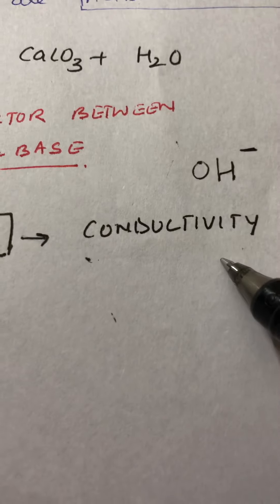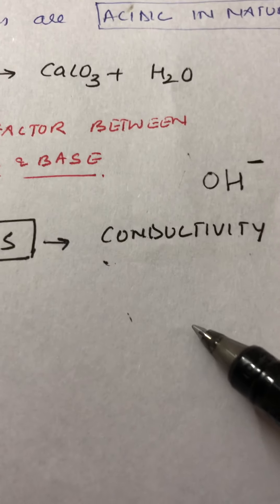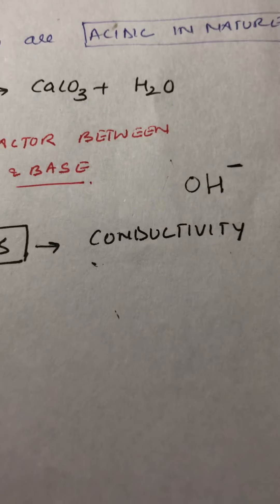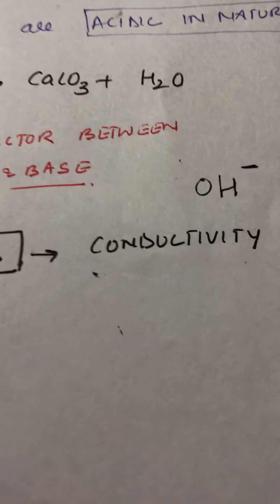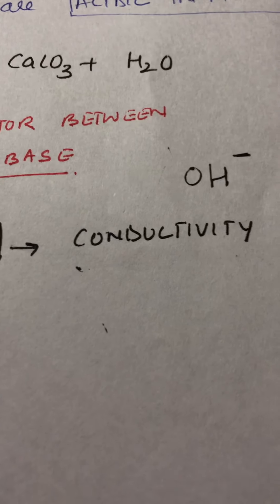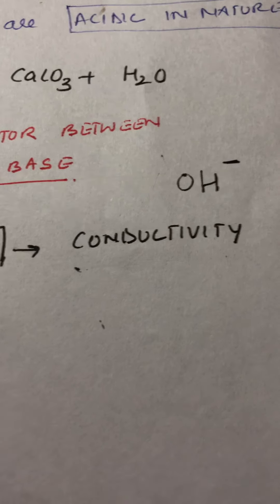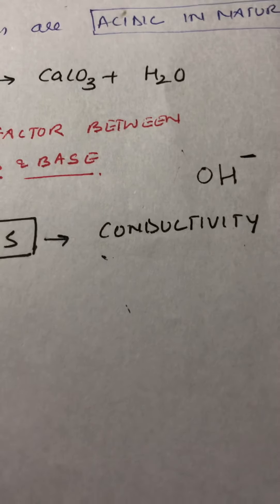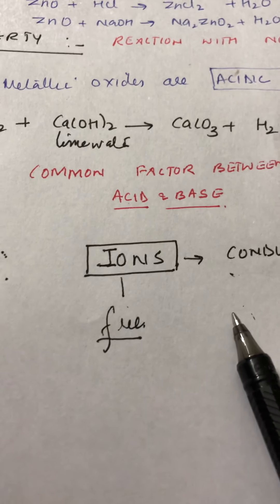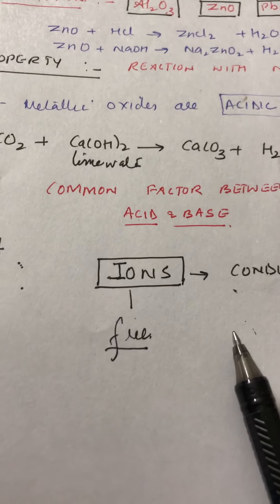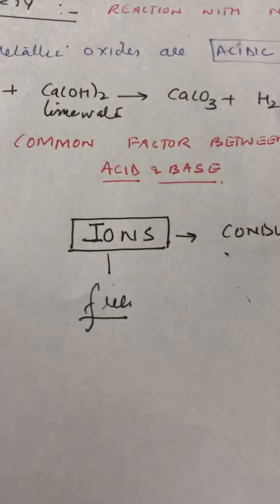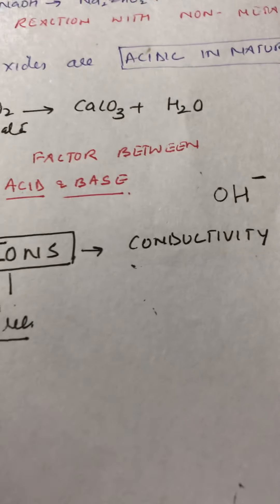Similarly, if we take water and add a few drops of a base such as NaOH, KOH, or calcium hydroxide, the base will also ionize. The basic solution will contain free mobile ions, and these free mobile ions will make water a good conductor. So pure water can be made a good conductor by adding either a few drops of acid or a few drops of base.